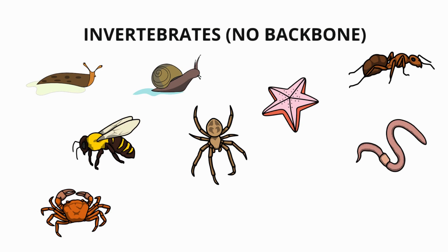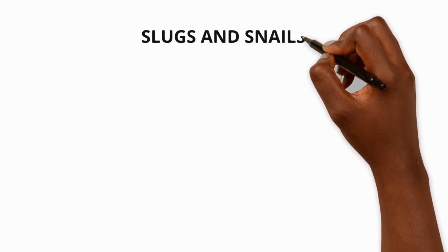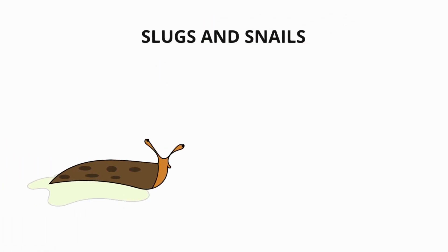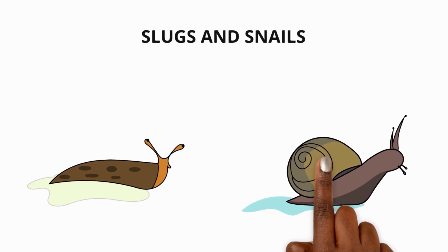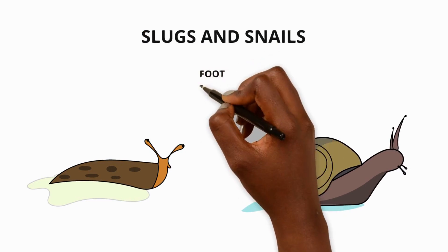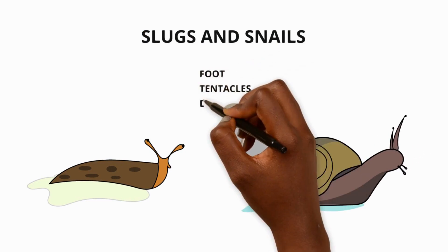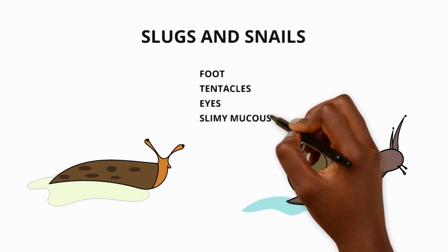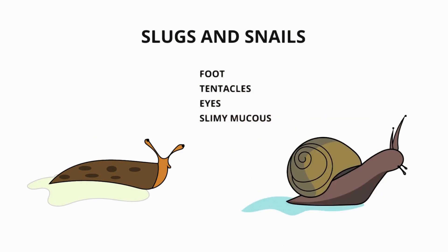We'll be discussing slugs and snails, earthworms, insects and spiders. Slugs and snails look similar and have flat bodies with a foot to help them move, long tentacles with eyes and a slimy mucus that helps them stick to surfaces. Snails have a large shell on their back while slugs can hide in small gaps.